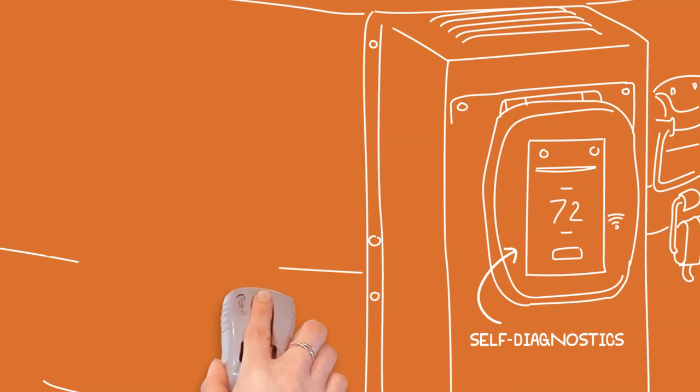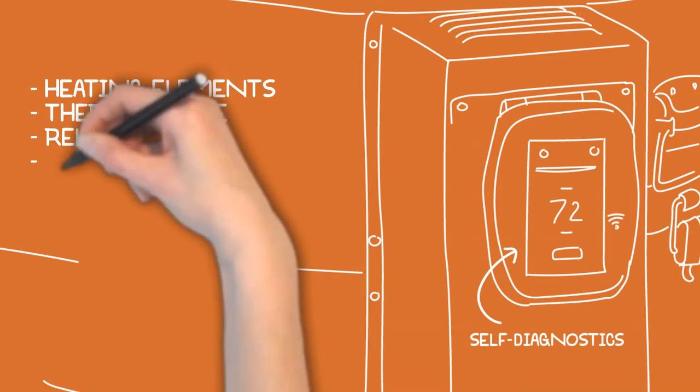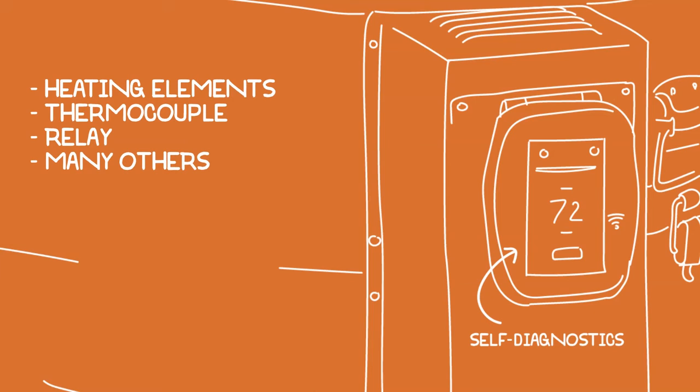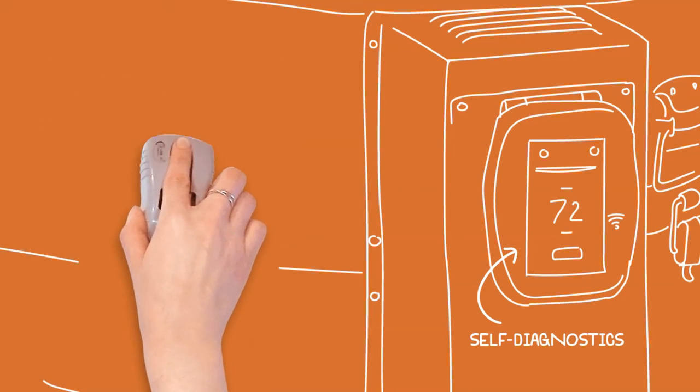If you need support buying parts to fix it, you can contact your local dealer. They have most of the common spare parts, such as heating elements, thermocouples, relays and many others. You can also order parts directly from the factory.